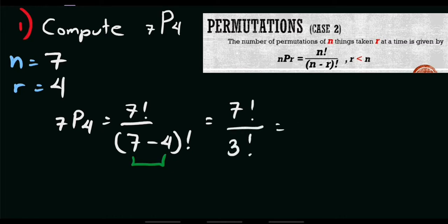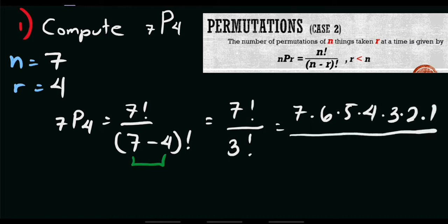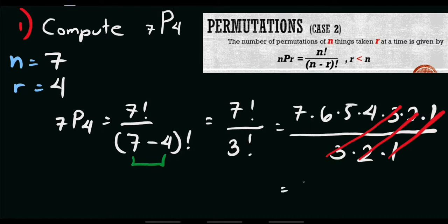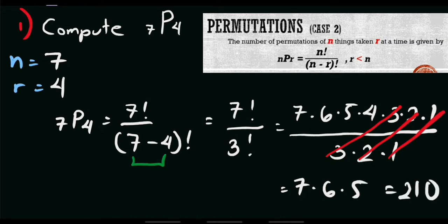Let's simplify. 7 factorial equals 7 times 6 times 5 times 4 times 3 times 2 times 1, and 3 factorial equals 3 times 2 times 1. Since they share common factors, we cancel out 3, 2, and 1. We're left with 7 times 6 times 5, which equals 210. So the answer is 210.